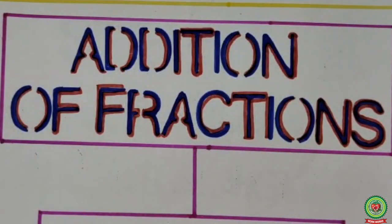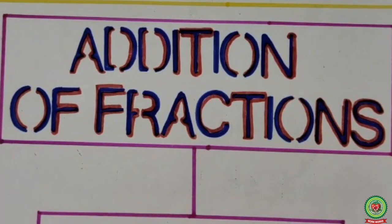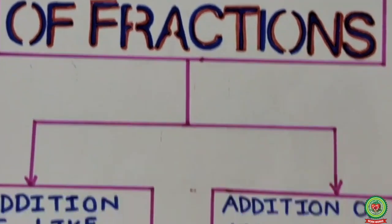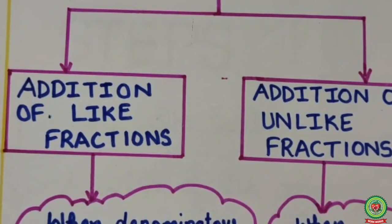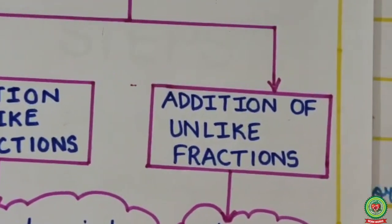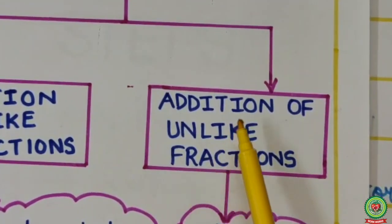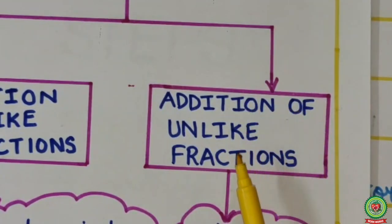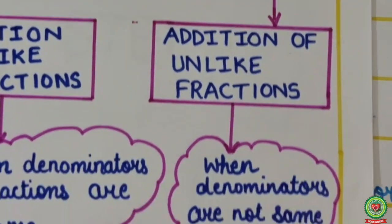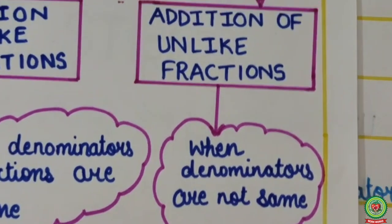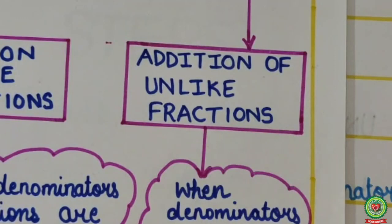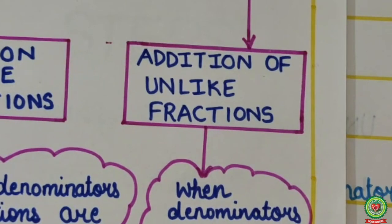In addition of fractions, there are two types. Type 1 is addition of like fractions, which we have already done. Today we will discuss Type 2, that is addition of unlike fractions. Unlike fractions means denominators are not same. So here we will add fractions in which denominators are not same, but first we have to see the steps.